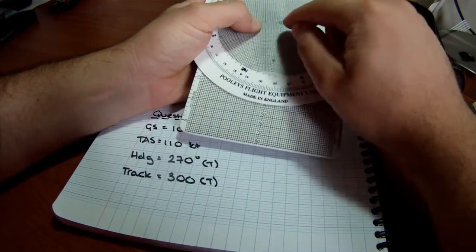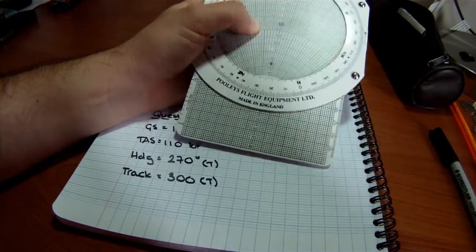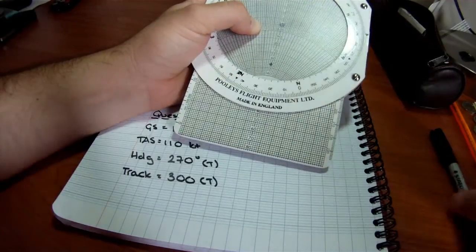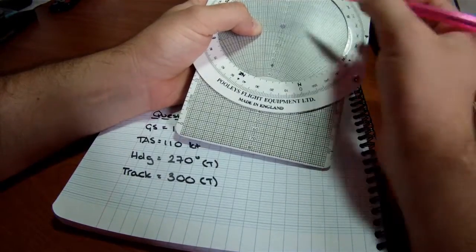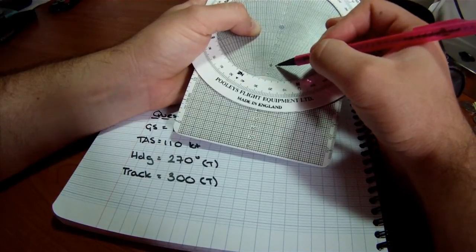So 110, 120, 130, 140, 150, 160... Sorry about that. Let's go again. 110, 1, 2, 3, 4, 5. 55 knots.